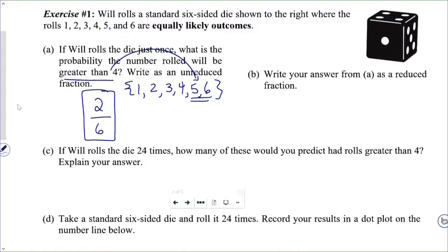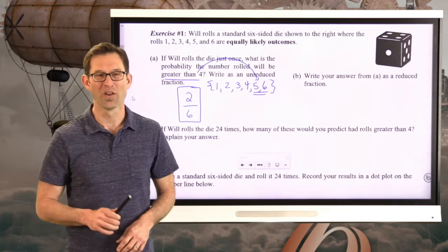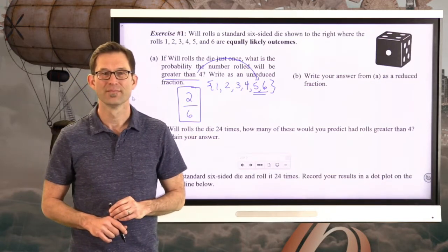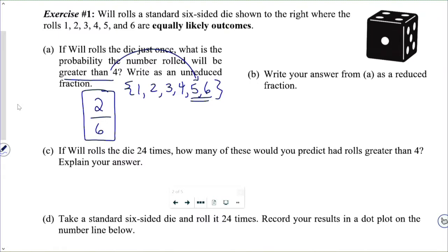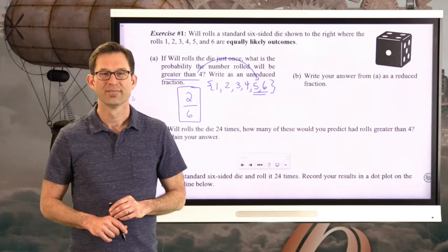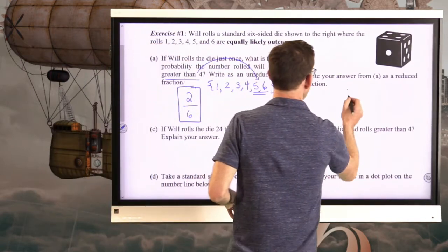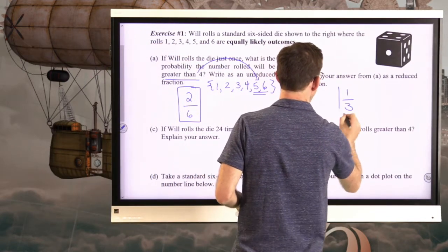So our probability is 2 sixths. That's it, 2 out of 6. Now, letter B: Write your answer from A as a reduced fraction. Pause the video for a moment and reduce that fraction.